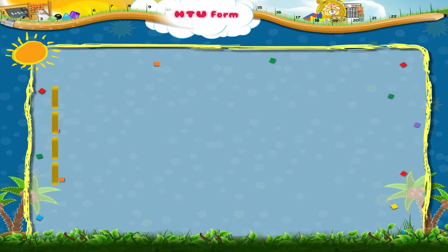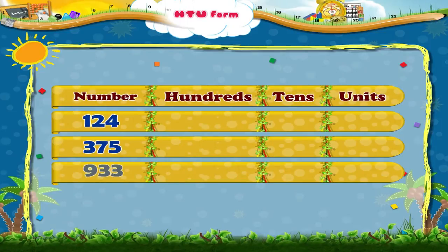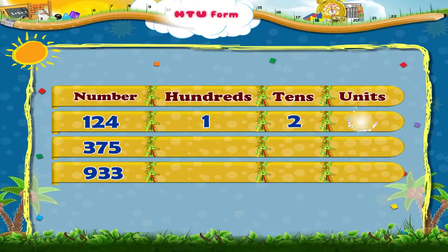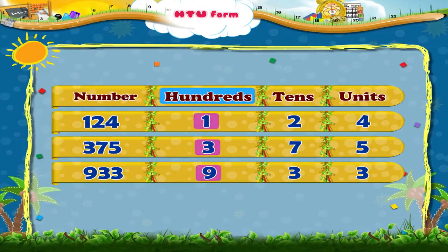Let us look at some three-digit numbers: 124, 375, 933 are some three-digit numbers. Each of these numbers has a hundreds place, a tens place and a units place.